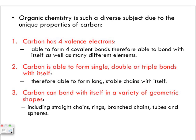Carbon can bond with itself in a variety of geometric shapes. We'll see straight chains, and we're primarily going to look at the aliphatic hydrocarbons, as we'll talk about what they are in the next video. Carbon can actually form rings, branch chains, tubes, spheres — so many different geometric shapes. We're going to focus more on the straight chains and branch chains, as well as some rings in the upcoming lessons.